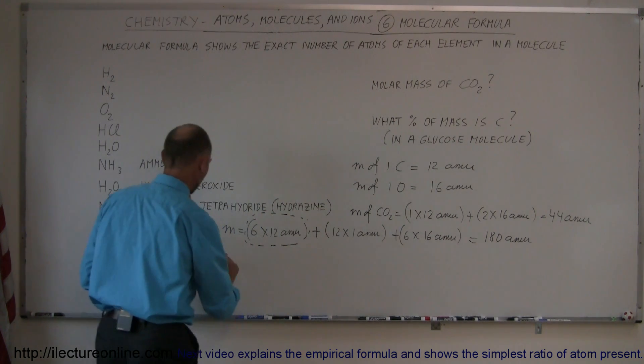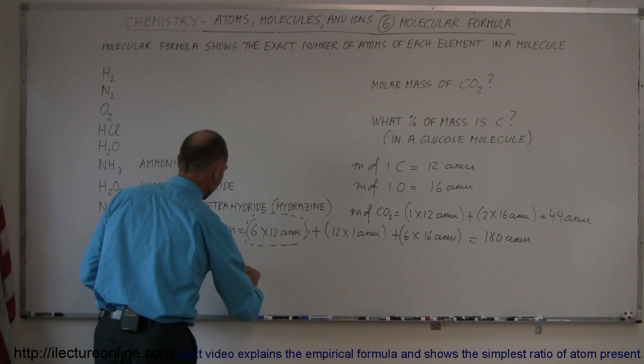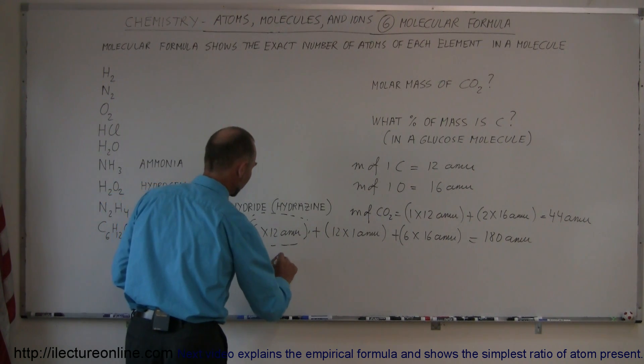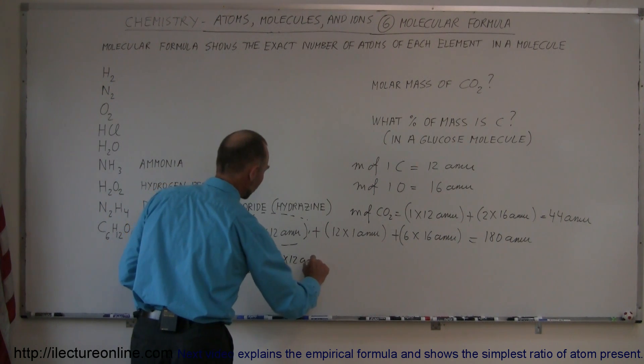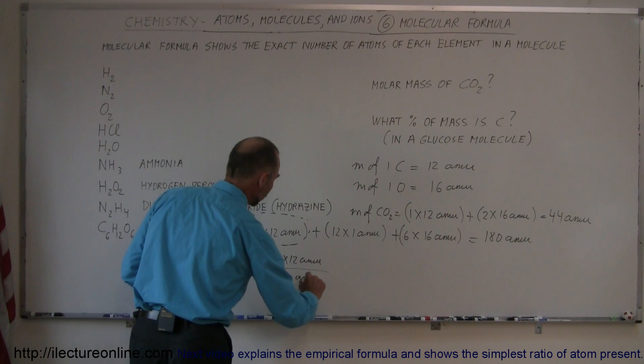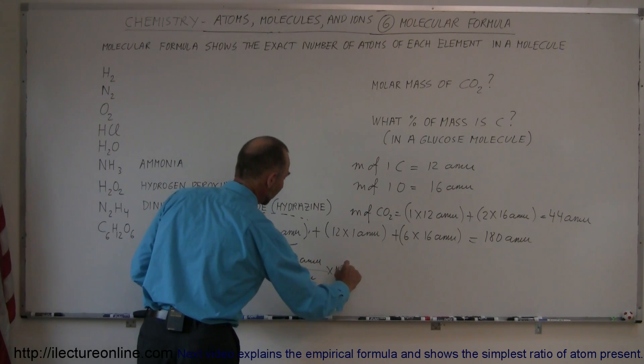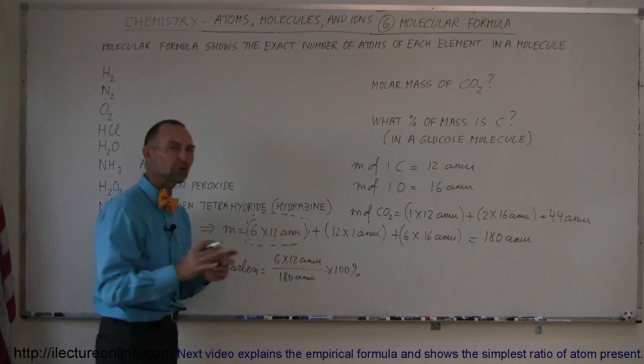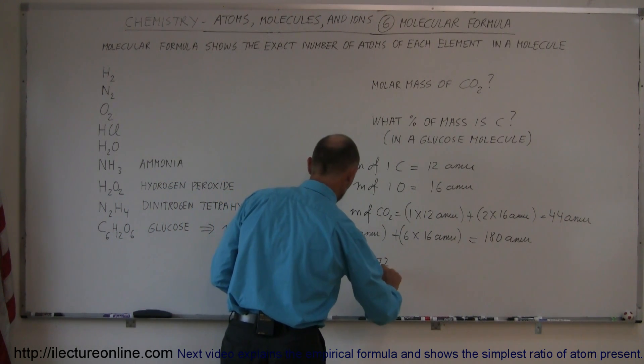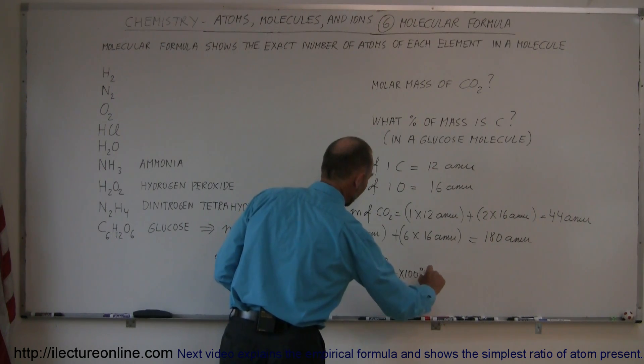So what we can do is the percent carbon is equal to the ratio of carbon, so that would be six times 12 AMUs, divided by the total, which is 180 AMUs, times 100%, because we want to convert that ratio to percentage, and then this would be equal to 72 over 180, times 100%.